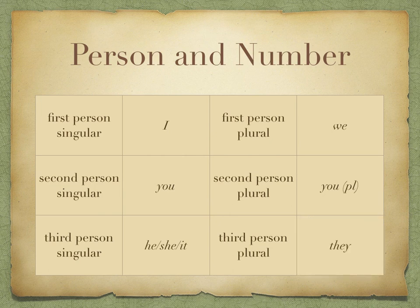Each verb that you learn will come with six sets of endings: that's first person, second, and third person singular, and then the plural forms. Make sure you know what these all relate to.